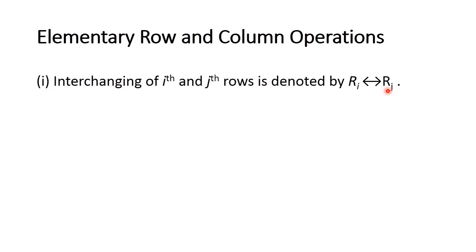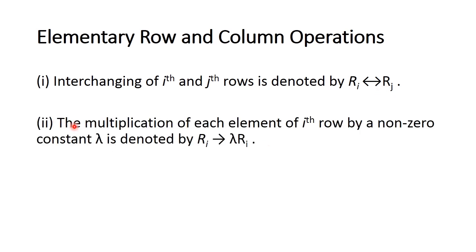The second one is the multiplication of each element of any row by a non-zero constant lambda, denoted by Ri to lambda into Ri. Here lambda is a non-zero constant and Ri is the ith row.